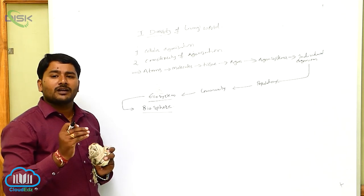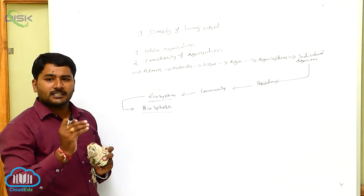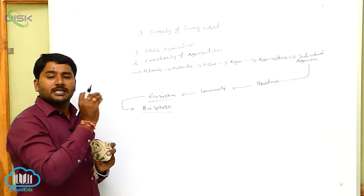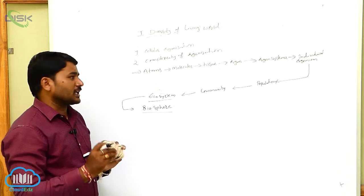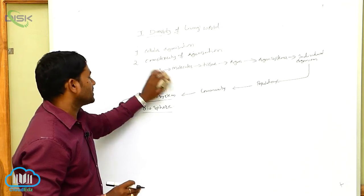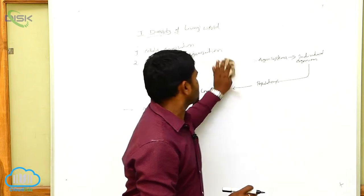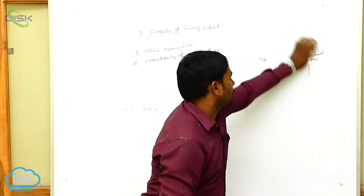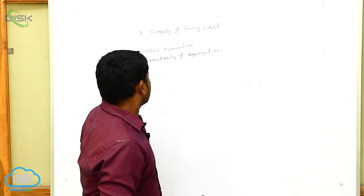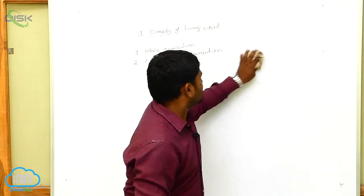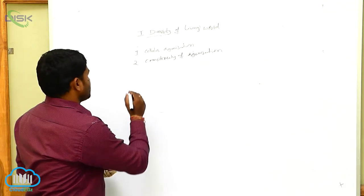So living organisms show complexity — from the cellular level to the individual level. That is ordered complexity, or complexity of organization. This is the second character exhibited by living organisms.